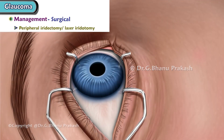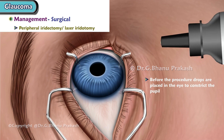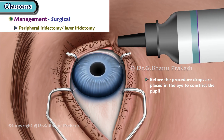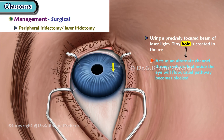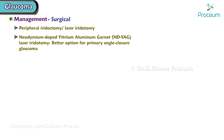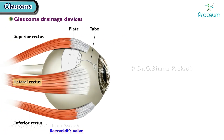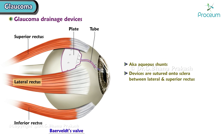Peripheral iridectomy / laser iridotomy: drops are placed to constrict the pupil, then a precisely focused laser beam creates a tiny hole in the iris. This hole acts as an alternate channel for fluid flow if the usual pathway becomes blocked and does not affect vision. Nd:YAG laser iridotomy is a better option for primary angle closure glaucoma.